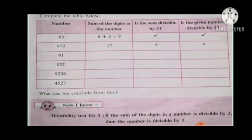Next, 872 — adding the digits gives 17. 17 is not divisible by 3, so 872 is not divisible by 3. Next, 91: 9 plus 1 equals 10. 10 is also not divisible by 3, so 91 is not divisible by 3.